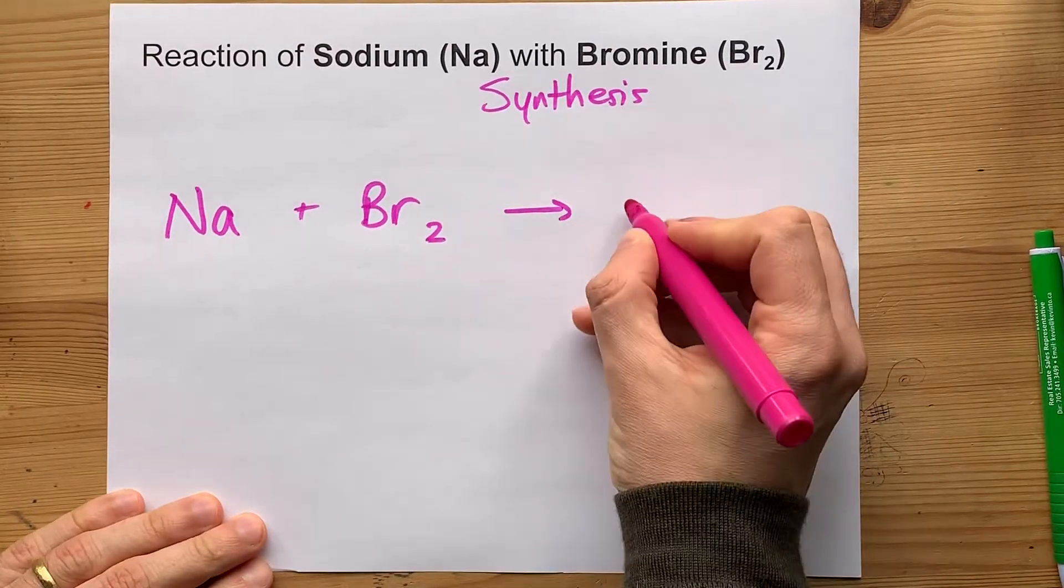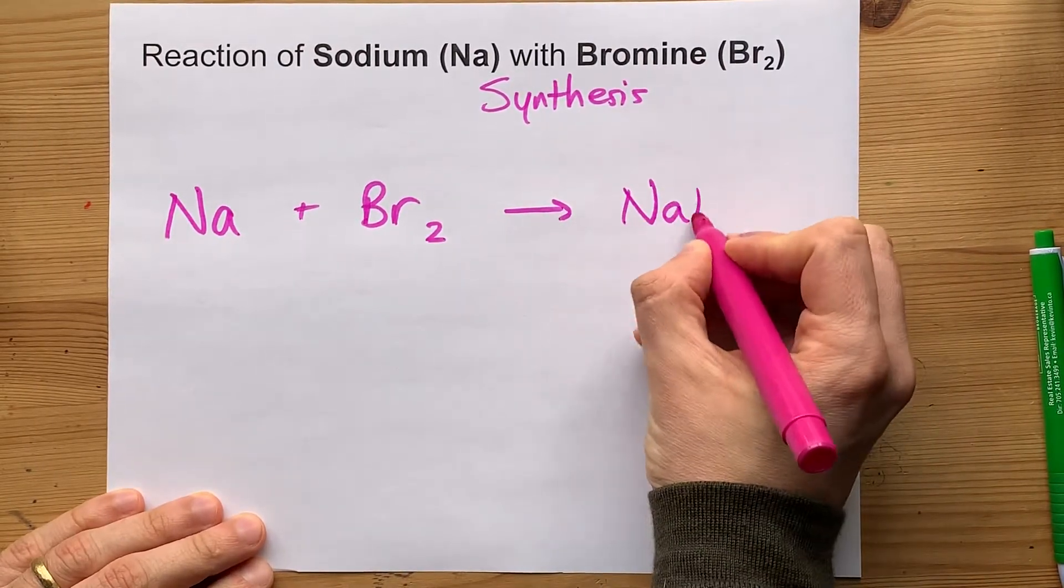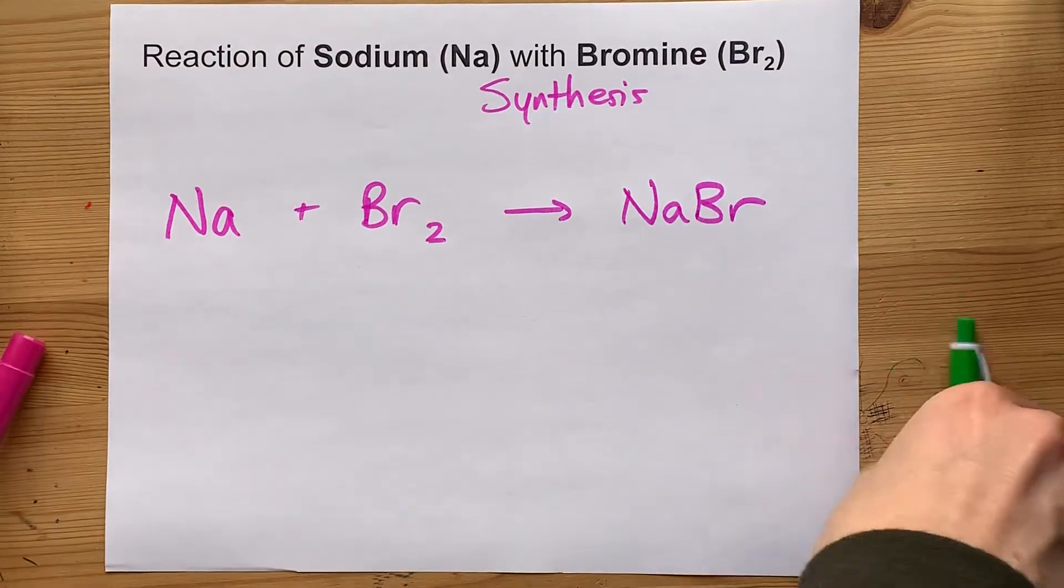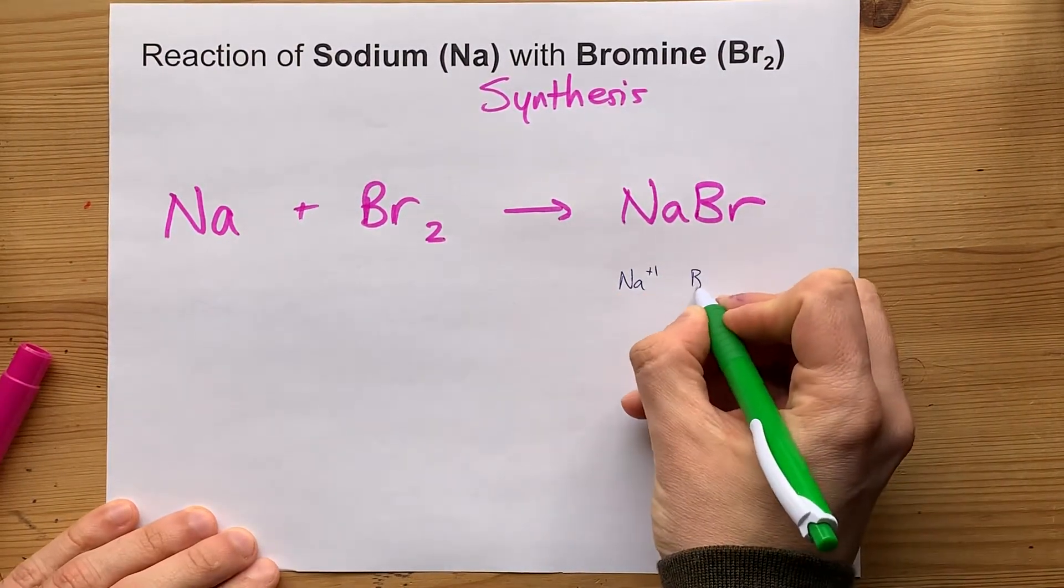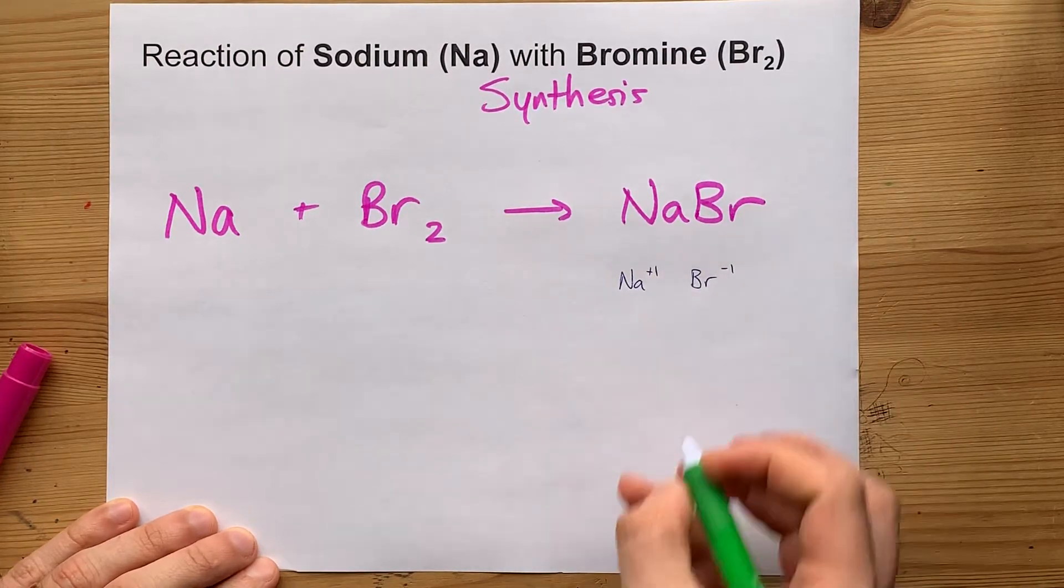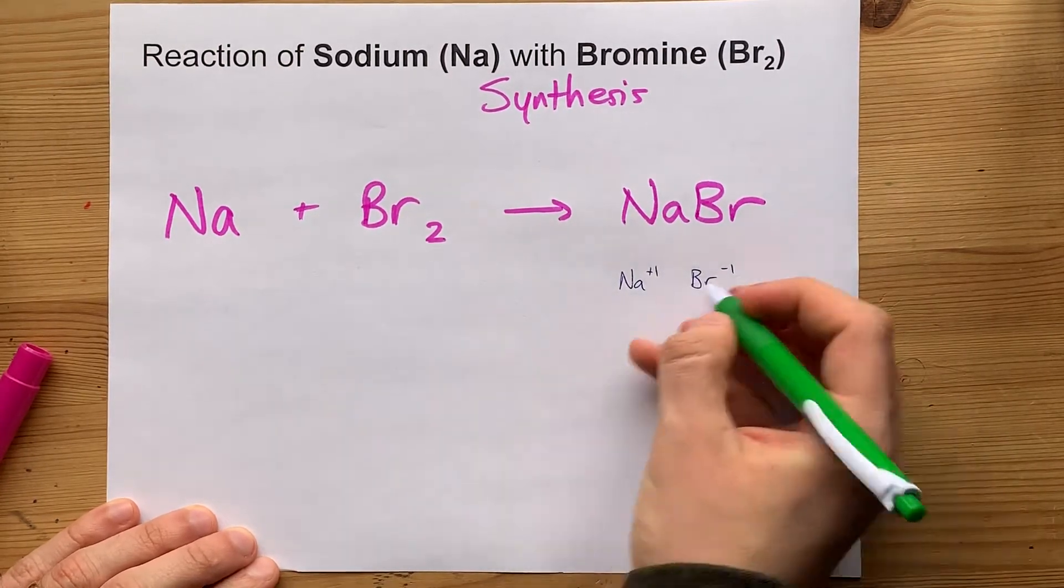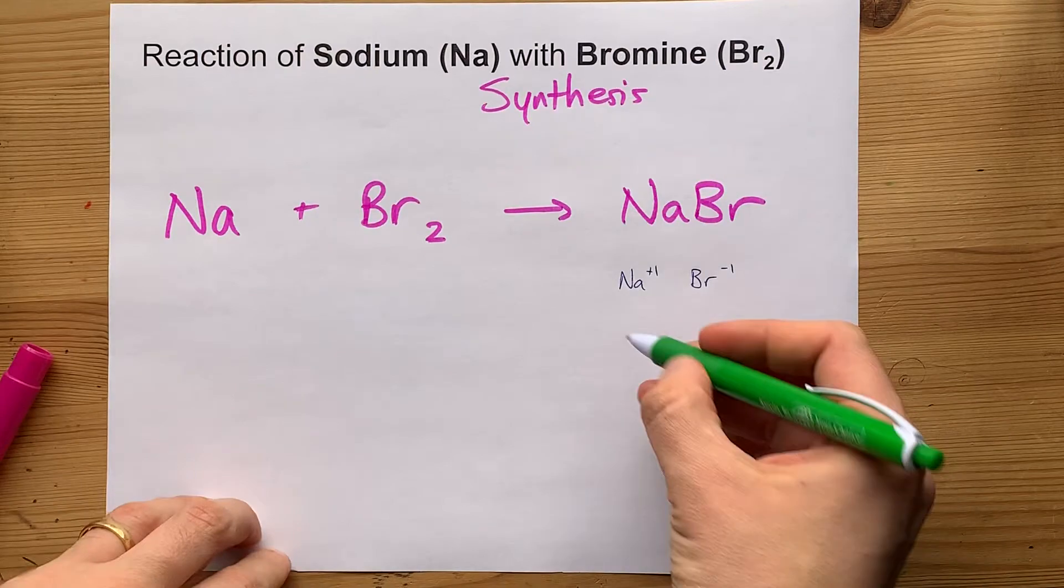They end up creating the ionic salt sodium bromide, which is made, by the way, from a sodium plus one ion and a bromide minus one ion. Crisscross the charges, you end up with sodium bromide.